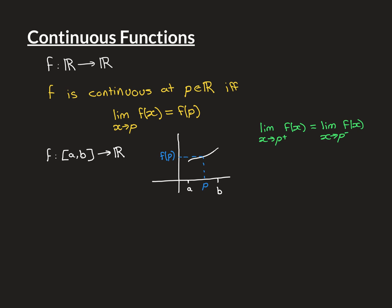We'll take a general point p in our domain and understand how, if you can draw the function continuously without lifting your pen, it means: (1) the limit as x approaches p exists, and (2) it equals f(p). To see that the limit exists, imagine tracing your pen from the left-hand side towards p. If our picture is true and you can plot this without lifting your pen, then as you bring your pen closer to the x-value of p, you approach some value — so the left-hand limit exists.